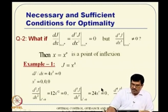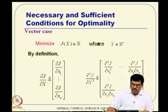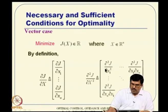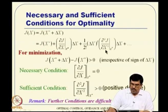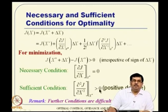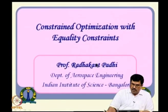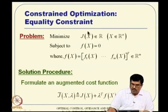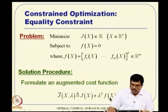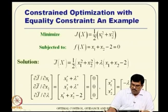We saw some examples, then moved to the vector case where the decision variables are x₁ to xₙ. In that case we have to define a gradient vector and then a Hessian matrix, and again using the same Taylor series idea, we arrived at the conclusion that for the necessary condition the gradient vector needs to be 0, and the sufficiency condition can be arrived at by looking at the positive definiteness or negative definiteness of the Hessian matrix.